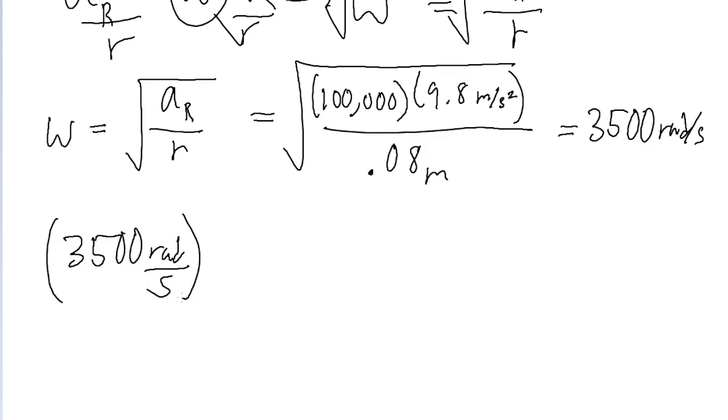So first, to convert from radians into revolutions, we need to know that 1 revolution is equal to 2 pi radians. So we'll divide by 2 pi radians. Then to convert from seconds into minutes, know that 60 seconds is equal to 1 minute. So we multiply by 60.